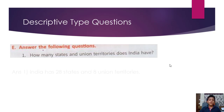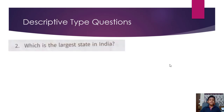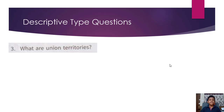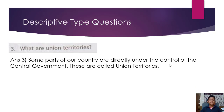Answer the following questions: How many states and union territories does India have? India has 28 states and 8 union territories. Which is the largest state in India? Rajasthan is the largest state in India. What are union territories? Some parts of our country are directly under the control of the central government — these are called union territories.